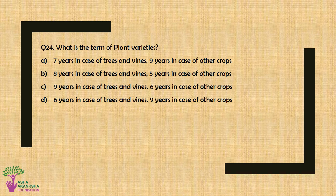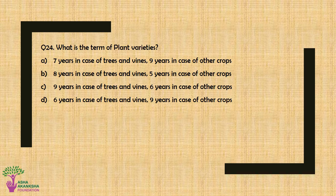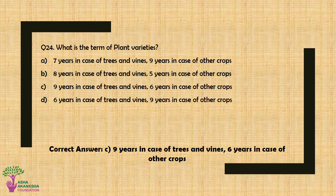Question No. 24: What is the term of plant varieties? Option A: 7 years for trees and vines, 9 years for other crops, Option B: 8 years for trees and vines, 5 years for other crops, Option C: 9 years for trees and vines, 6 years for other crops, or Option D: 6 years for trees and vines, 9 years for other crops. The correct answer is Option C — 9 years for trees and vines, 6 years for other crops.